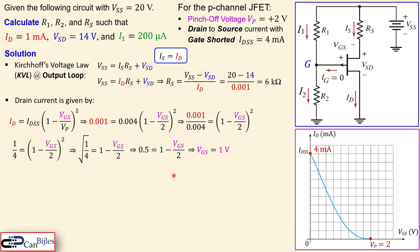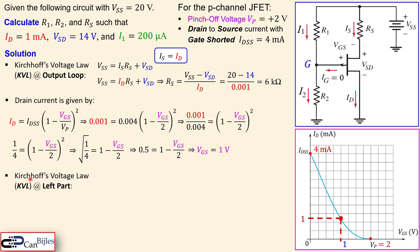Now we have VGS = 1 V. We need this value to calculate VG and then the resistors R1 and R2. Looking at the transfer characteristic graph, VGS = 1 V lies exactly halfway between 0 and 2 V, and it corresponds to a drain current ID of 1 mA — confirming our calculation graphically.